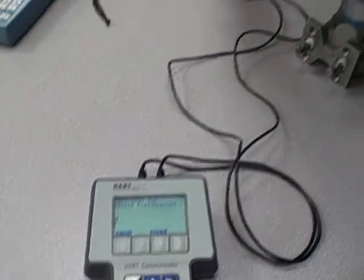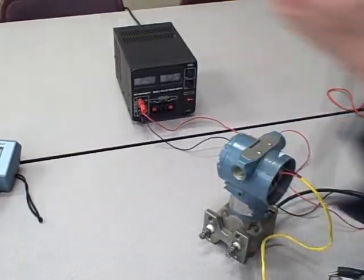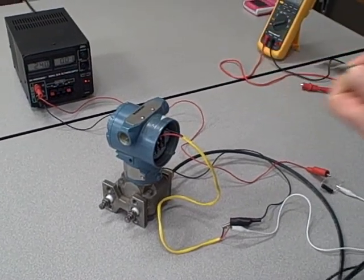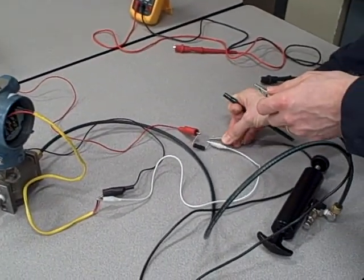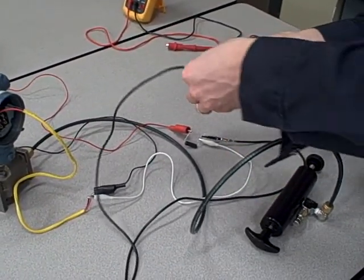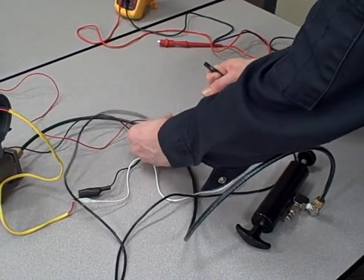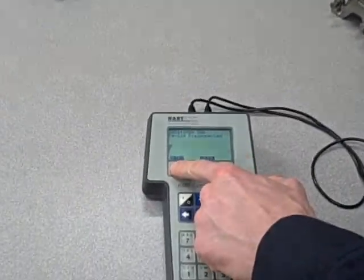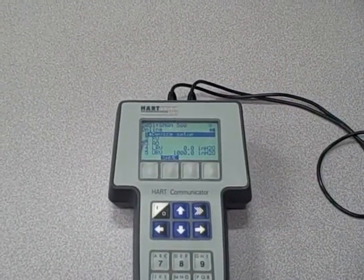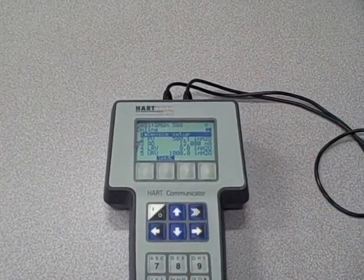Now here's another place you can connect the communicator. You can go directly in parallel with the loop resistance. It may not make sense at first why this works. I'll first demonstrate that it does work. I'll push the retry button, and here we are again. It's now reading the same variables.